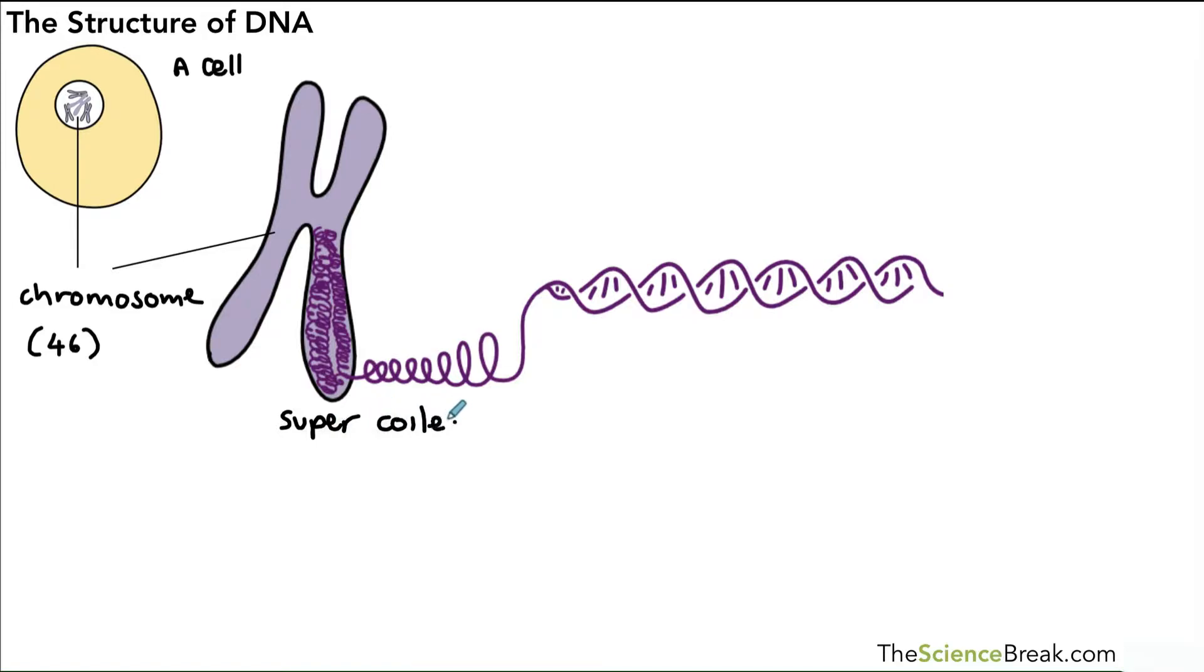So there's our super coiled DNA. If we looked at the structure in a little bit more detail, we saw that it was made of two strands wrapped around each other, and we call that structure a double helix.